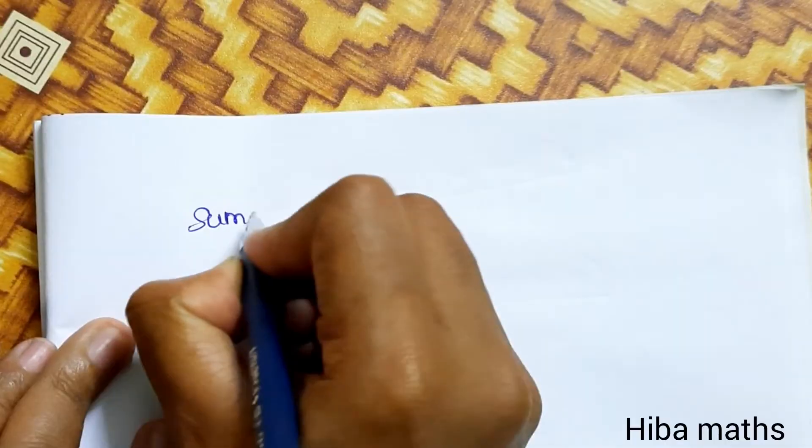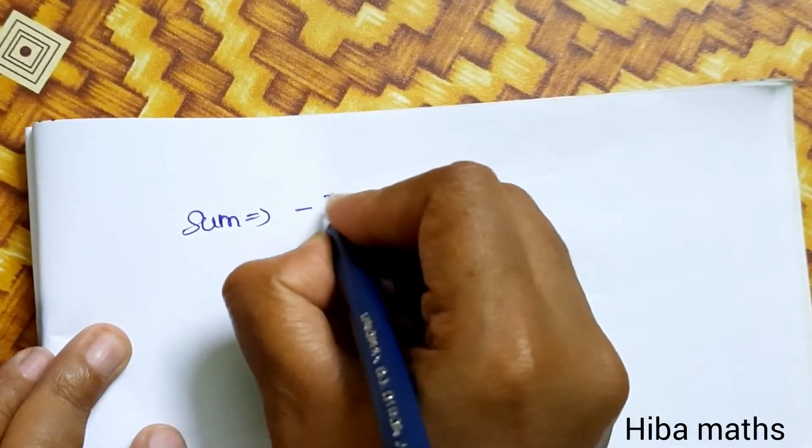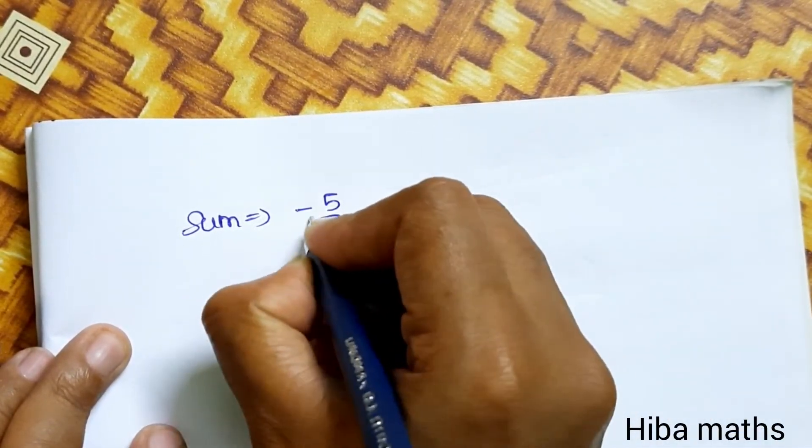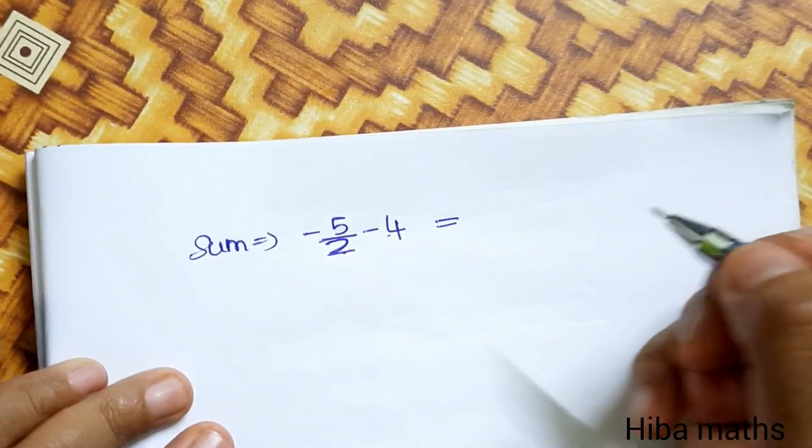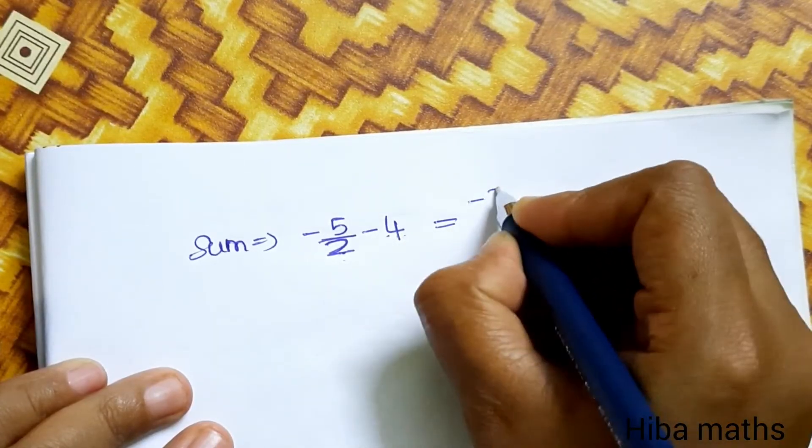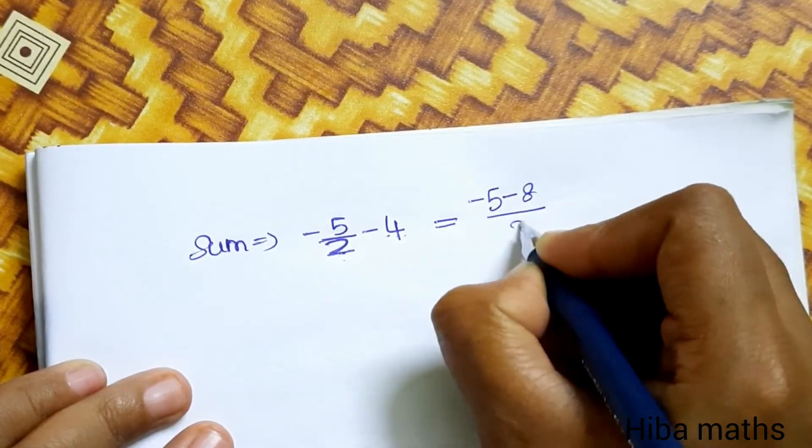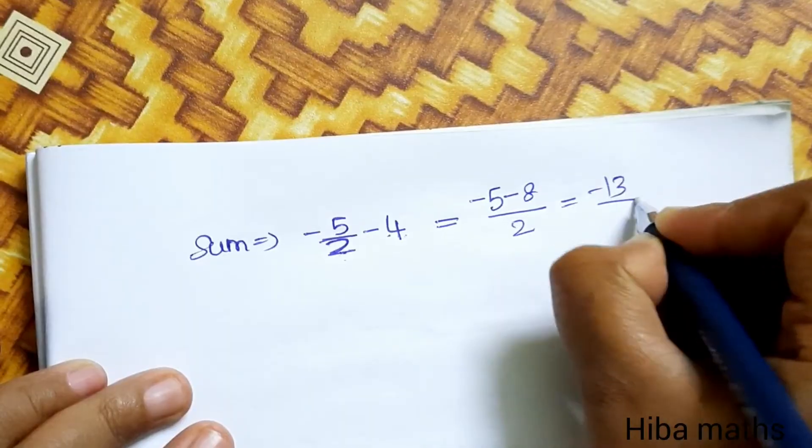Sum of the roots is -5/2 and -4. Minus into minus will add, so the sum of the roots is -8/2 which is -13/2.